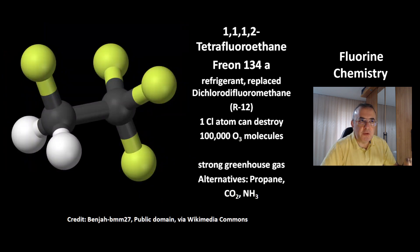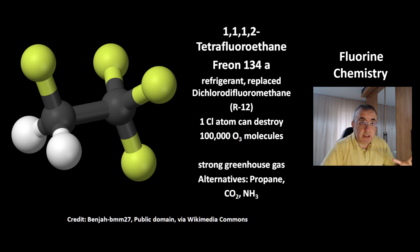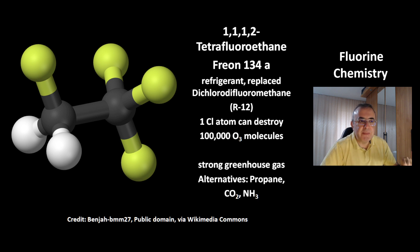1,1,1,2-tetrafluoroethane, Freon 134a, is used as a refrigerant. It replaced dichlorodifluoromethane R12. The problem with R12 is the chlorine atom — it can destroy up to 100,000 ozone molecules before it is removed from the cycle. That's why Freon 134a is better. However, this compound is itself a very strong greenhouse gas. Alternatives include propane, CO2 (carbon dioxide), and ammonia (NH3).